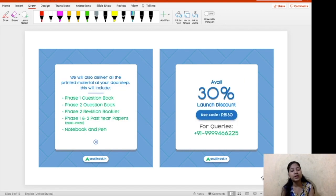The next point here is that you will get a book kit once you enroll in this course and this book kit comprise of phase 1 question bank, phase 2 question bank, phase 2 revision booklet, phase 1 and 2 past year papers starting from 2010 onwards, notebook and the pen.